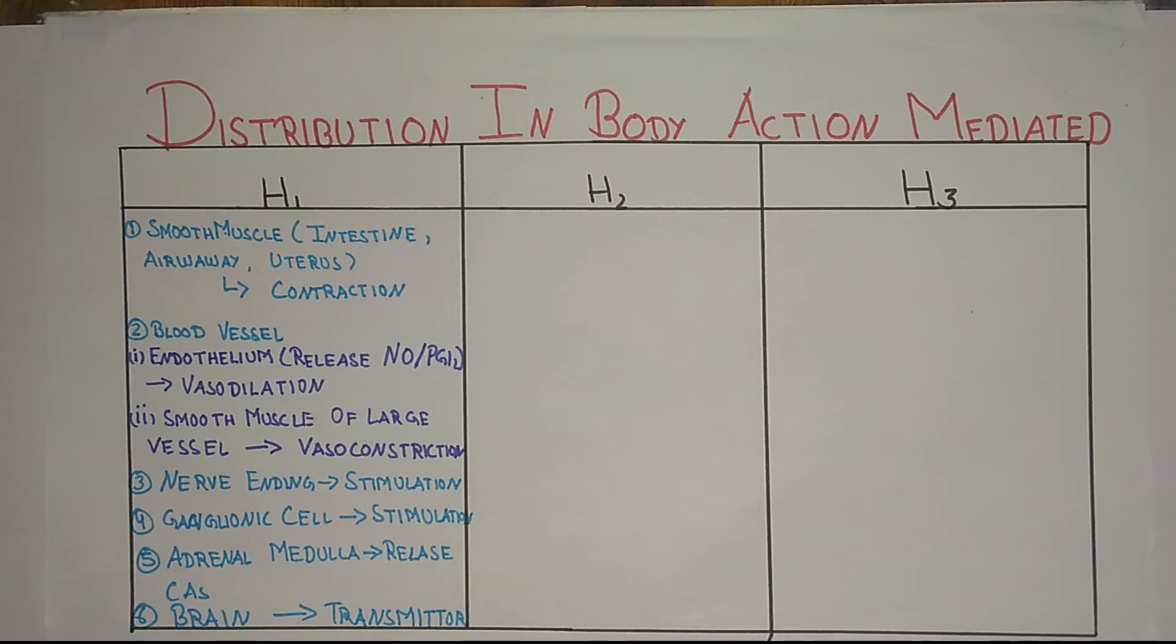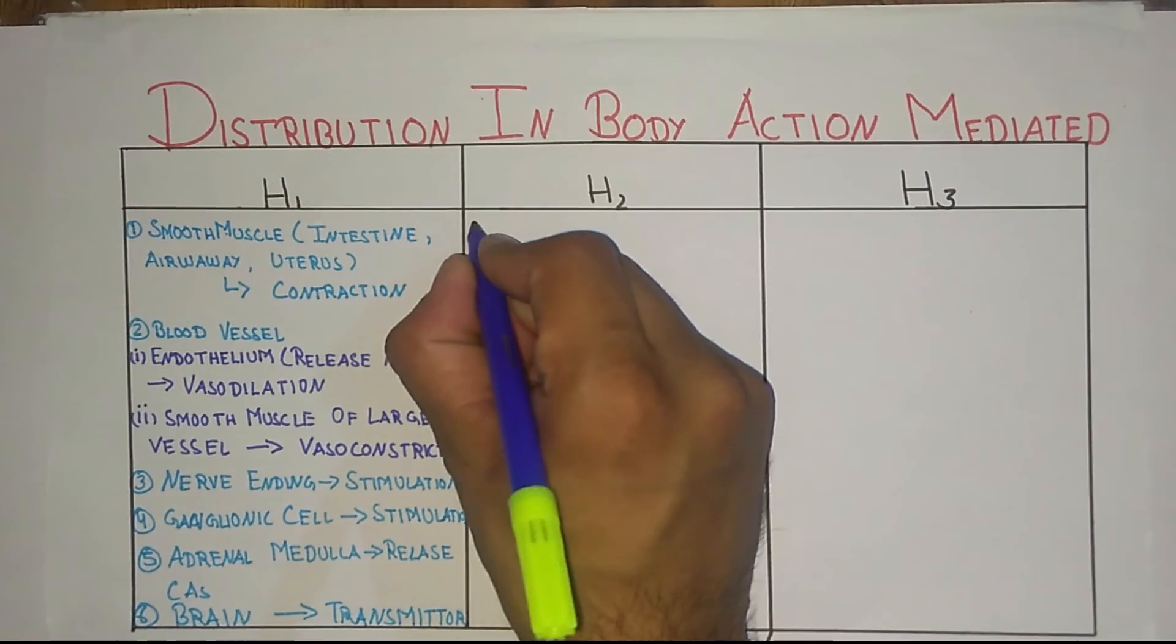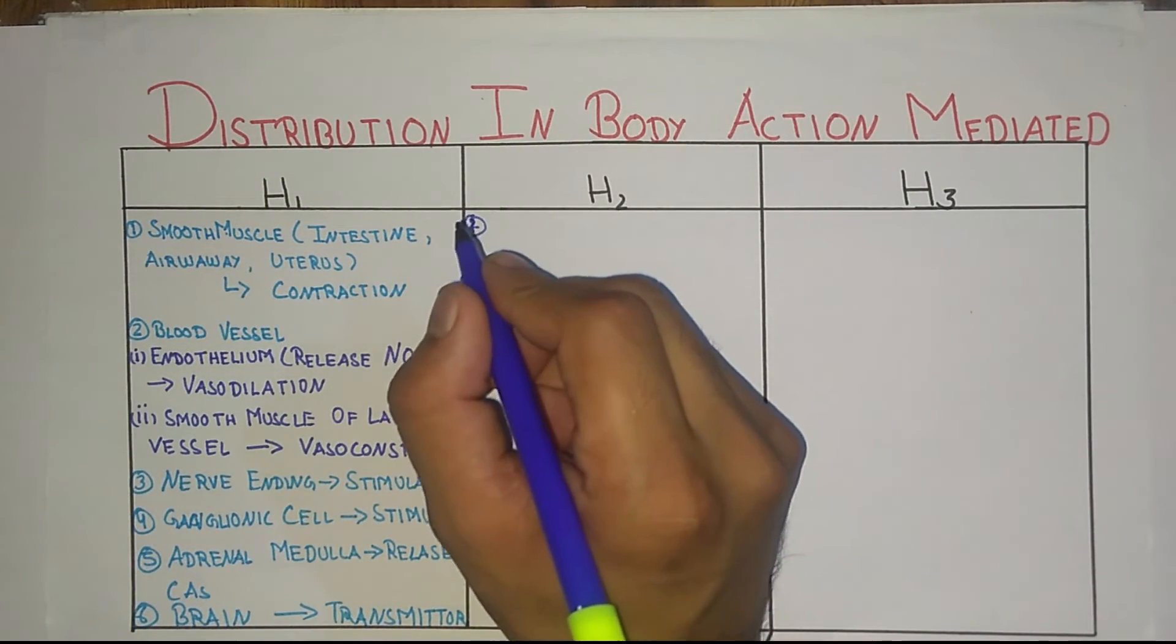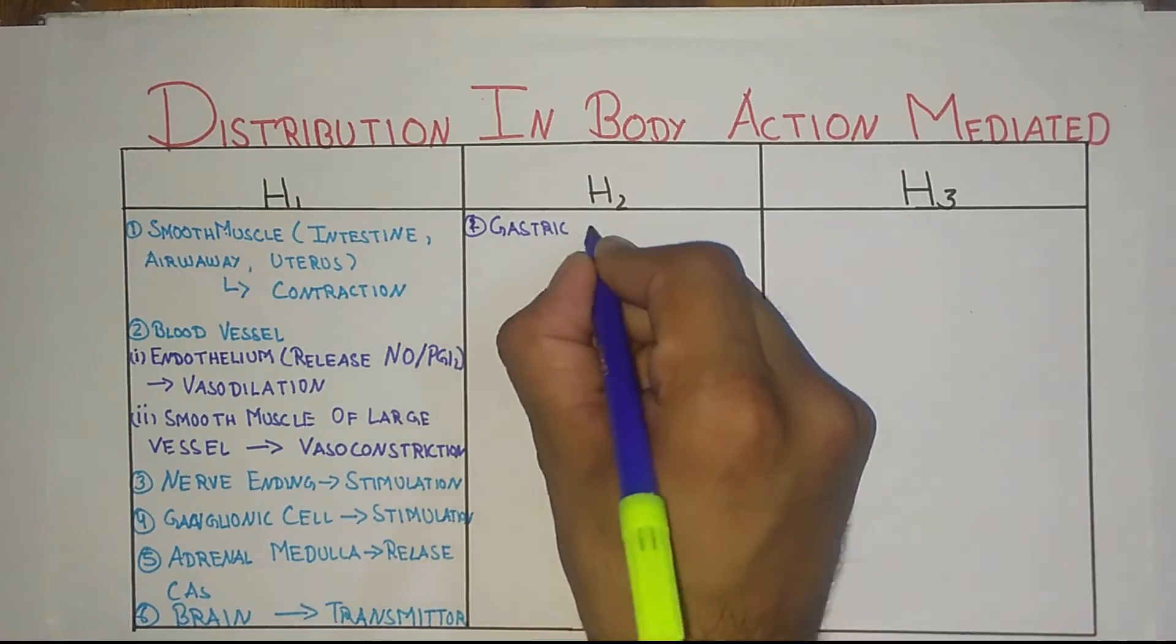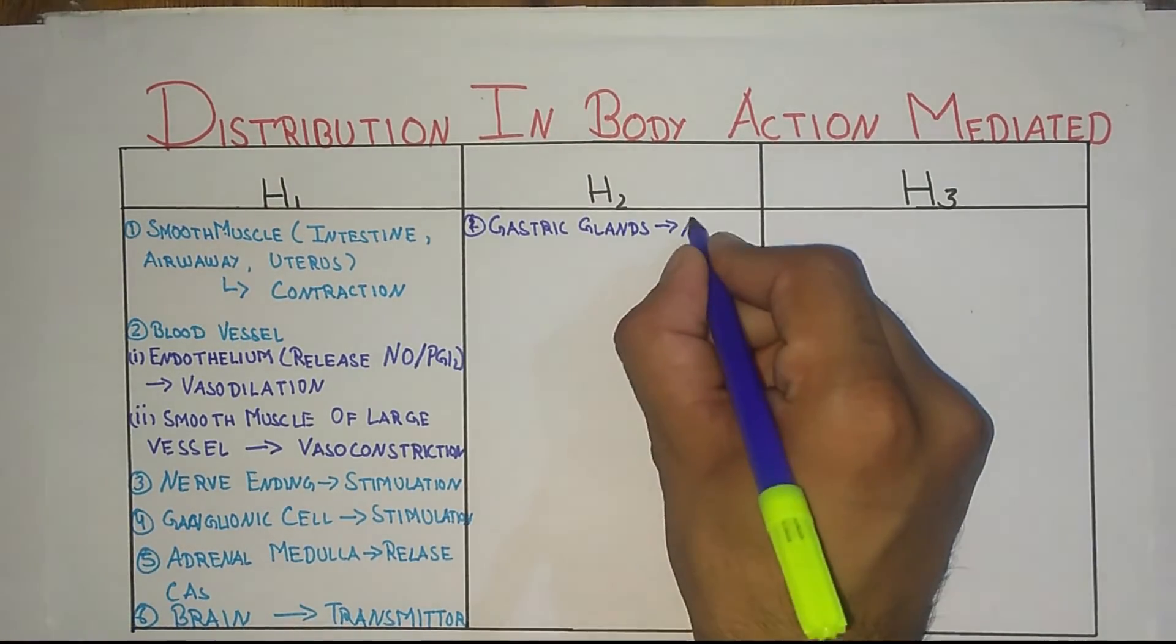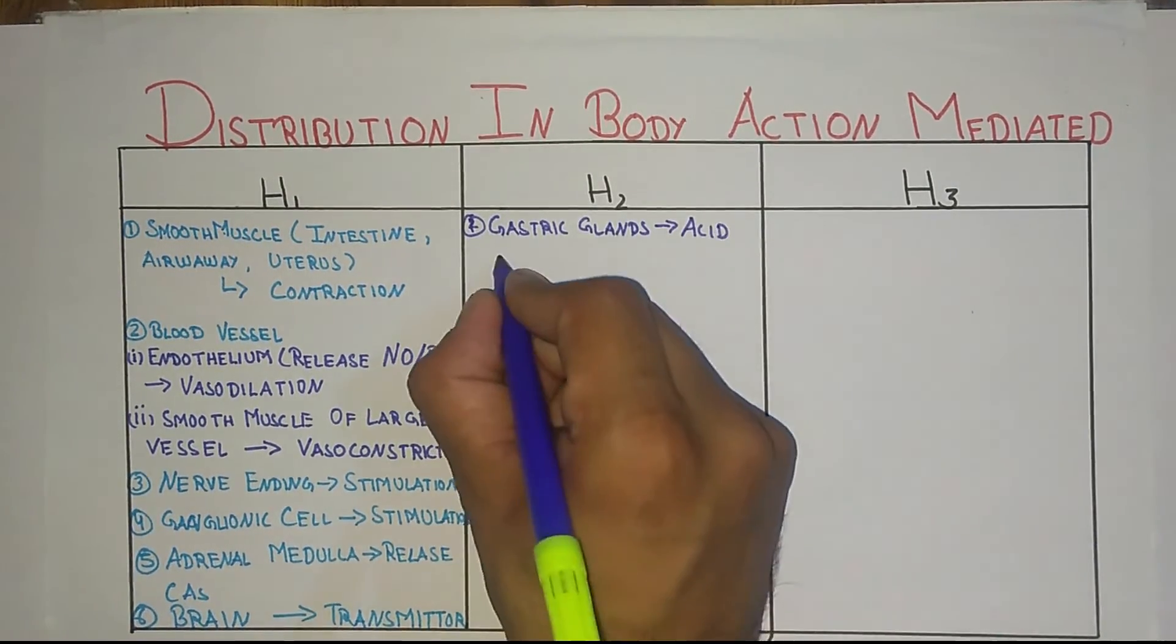This is all about H1 receptor. Now talking about H2 receptors - where are they present and what they do. H2 receptors are present in gastric glands where they cause acid secretion.